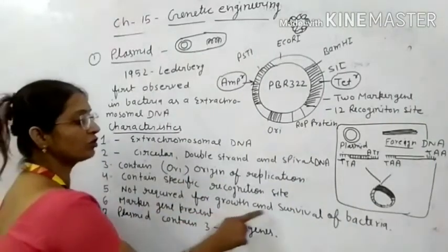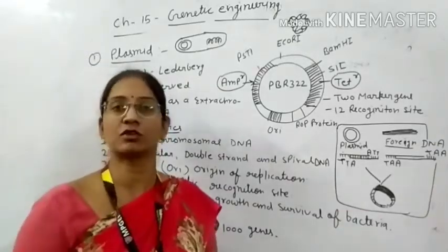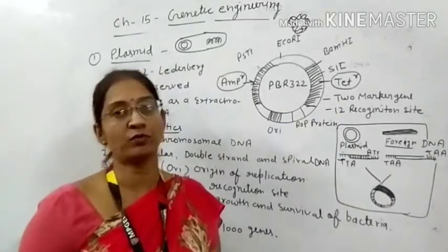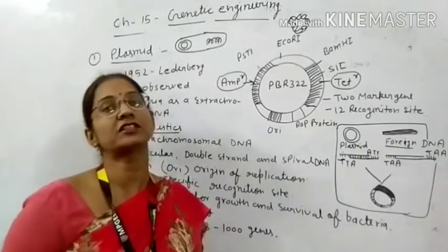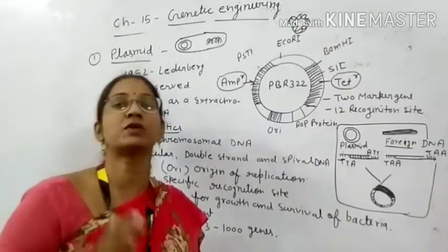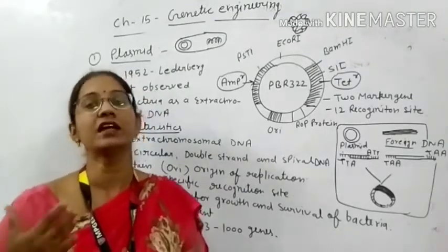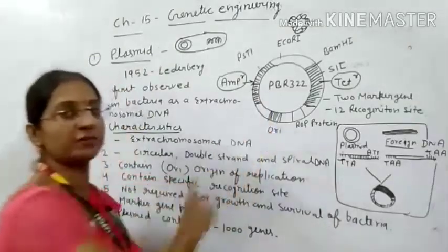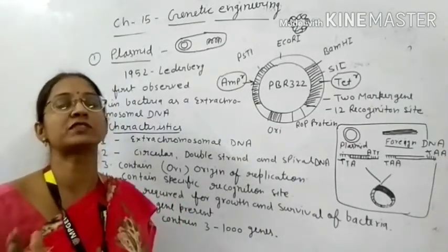Fifth, the plasmid is not required for the growth and survival of bacteria — it is extra. Sixth, there is a marker gene. We need at least one marker gene because from the marker gene we can identify which bacterial cell has taken up the plasmid. You can easily distinguish the transformed cell from the non-transformed cell. This marker gene is a special type of antibiotic resistance gene.